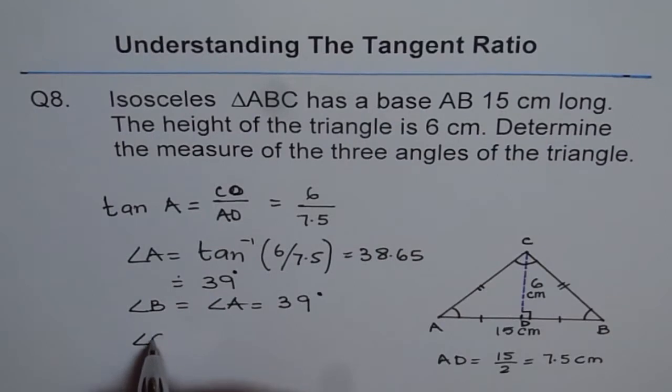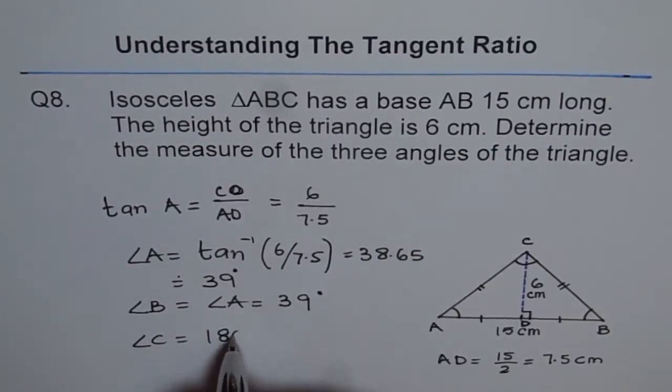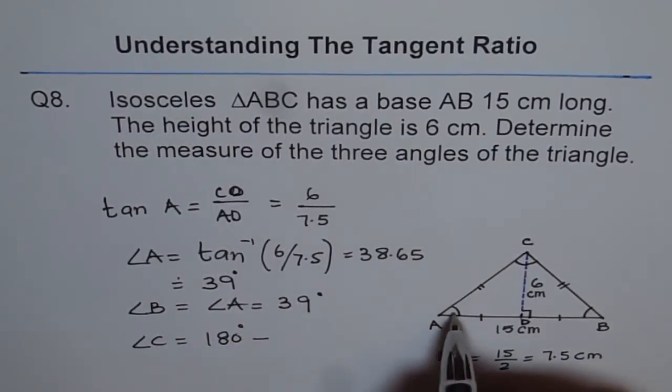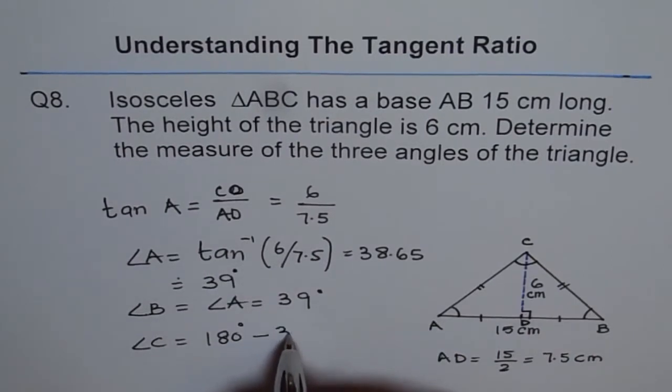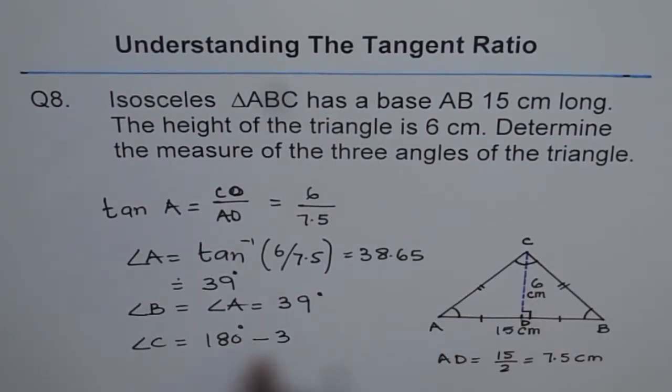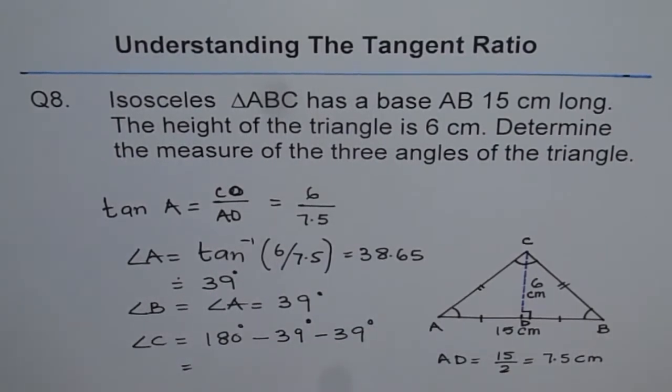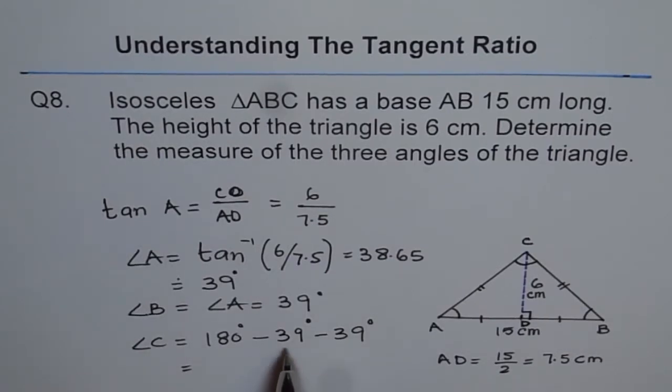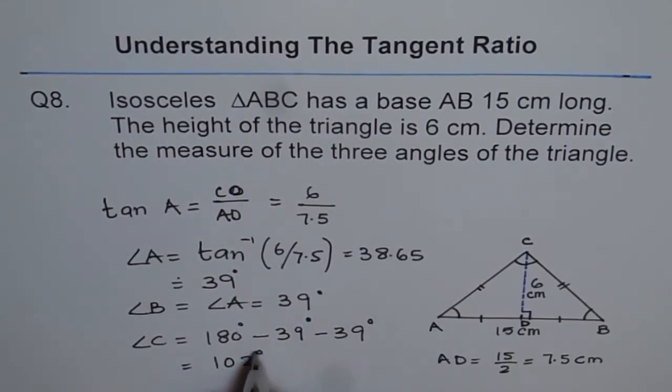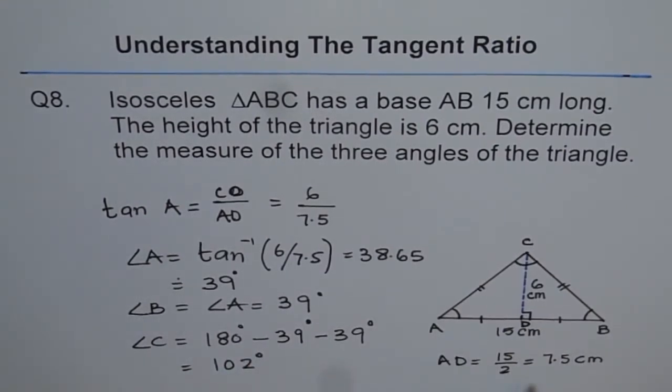Angle C should be 180 degrees minus angle A minus angle B, because the sum of three angles in the triangle is always 180 degrees. And that gives us, this is as good as 40, 40. So if you take out 80 and add 2, 102 degrees. So angle C is 102 degrees, right?